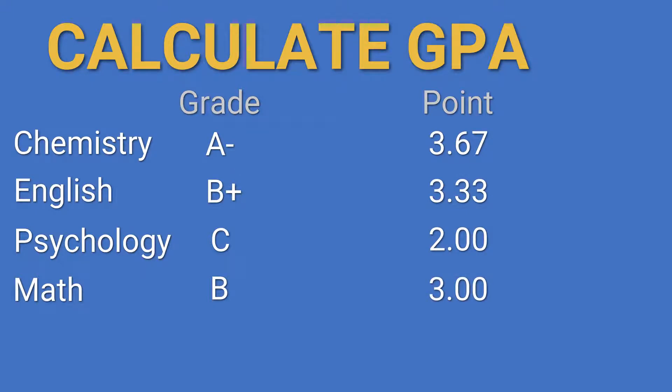Each of the courses will have a specific credit hour. Let's say as an example, Chemistry is a 4 credit hour while the rest are 3 credit hours. You can check with your school on the credit hour for each of your courses.